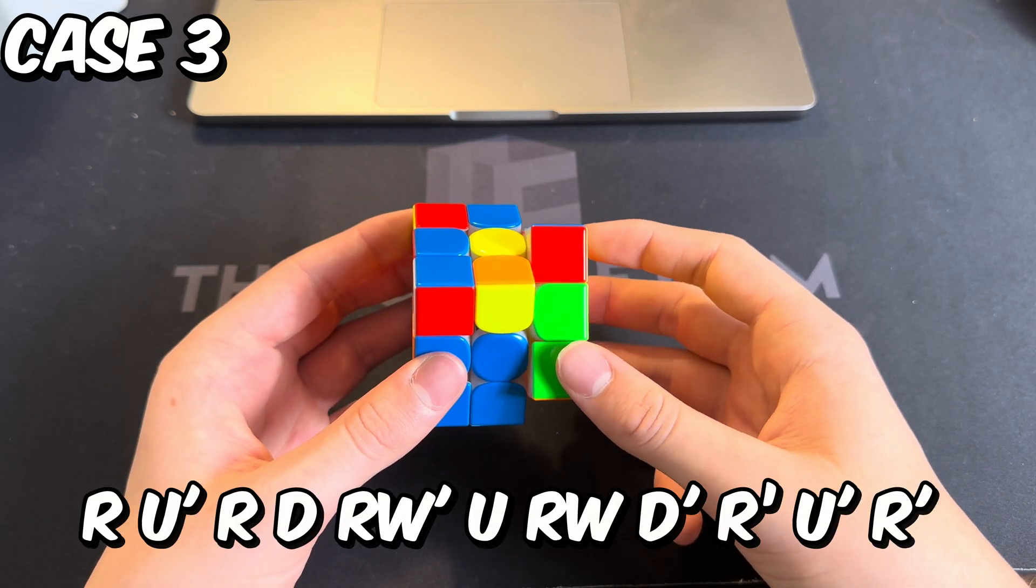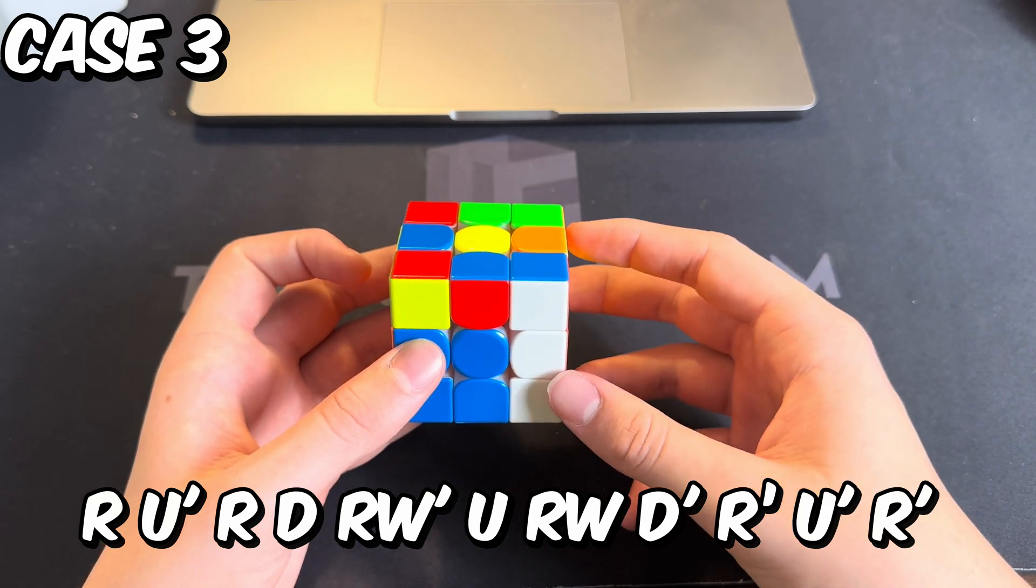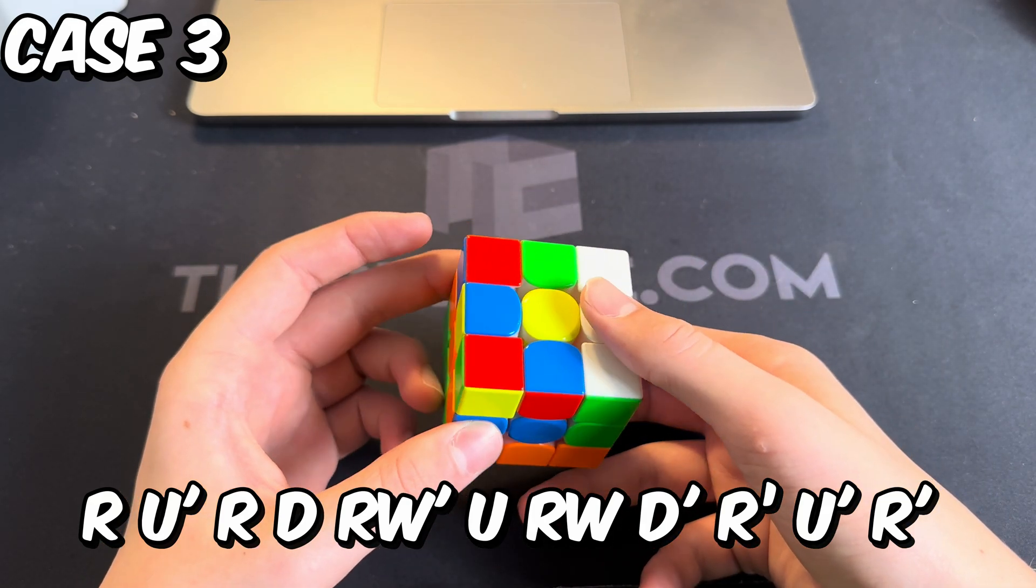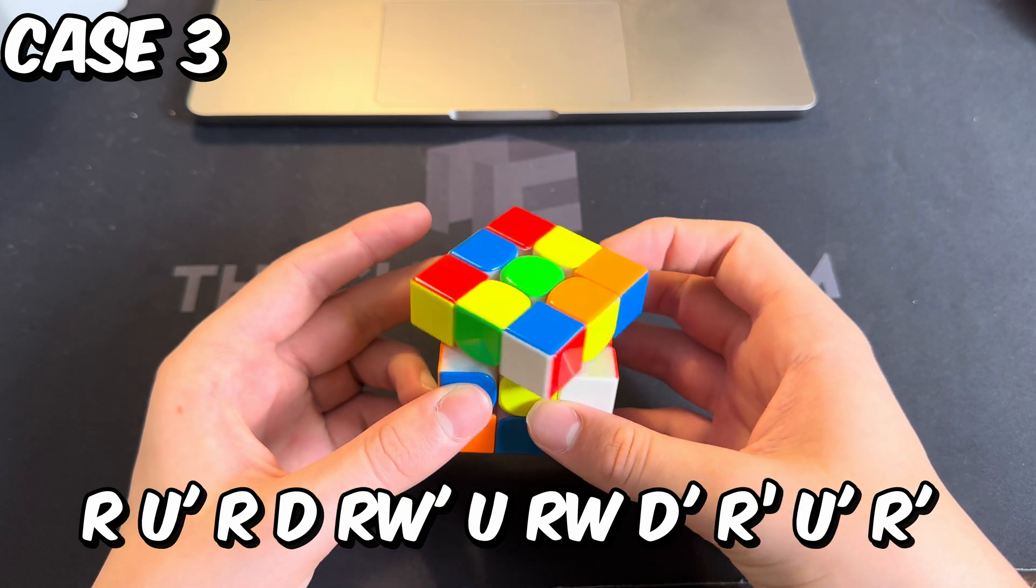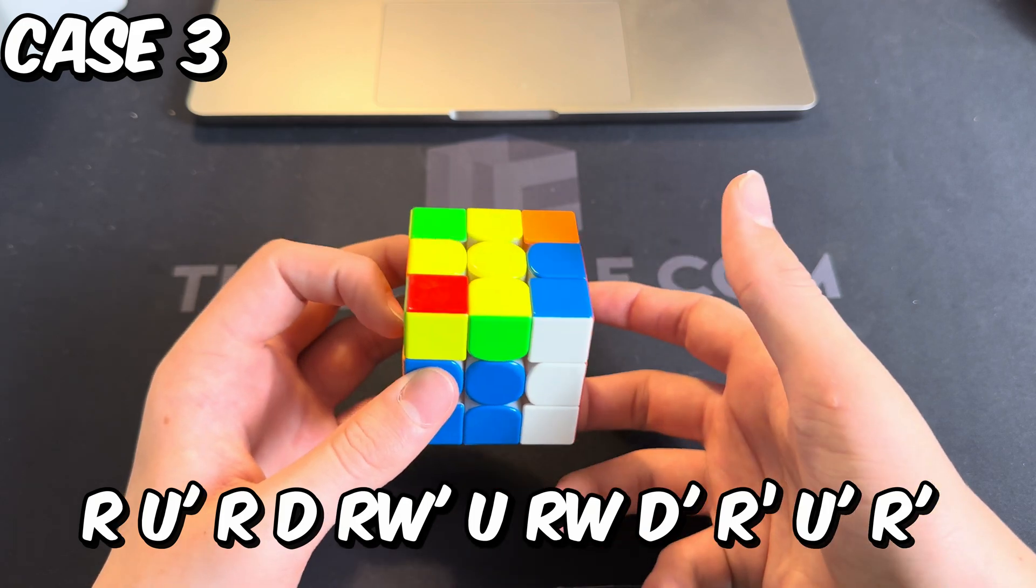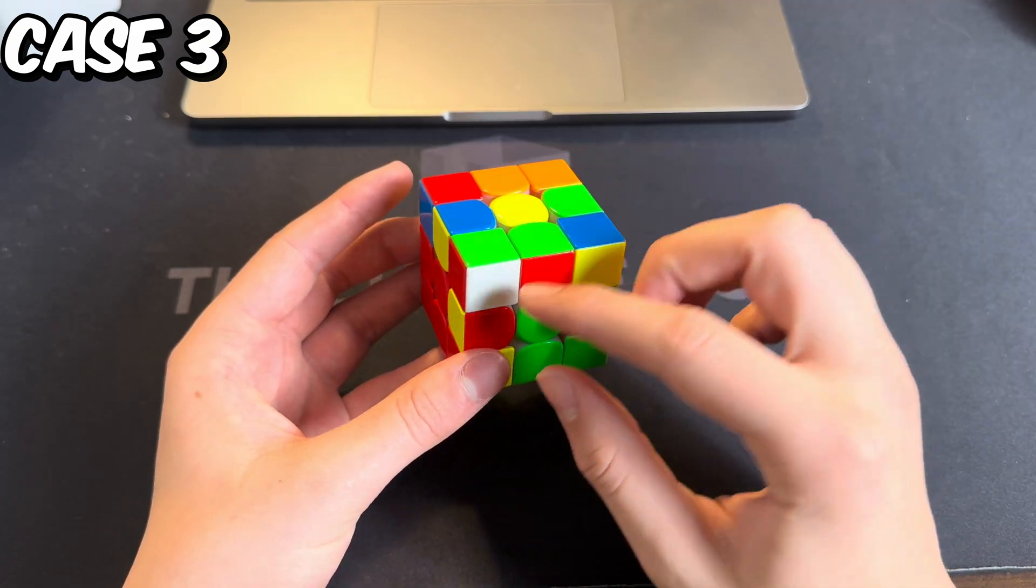Basically, you insert this corner, then you go into this wide R move where you do D, then wide moves like this, then D prime, and now just solve the pair with the cross edge.